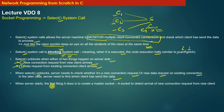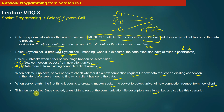When the server starts, the first thing it does is create a master socket — a socket to detect the arrival of new connection requests from new clients. This master socket, once created by the server, is used to give birth to the rest of the communication file descriptors for the clients. We have already visualized this scenario in the introductory lecture of this module.